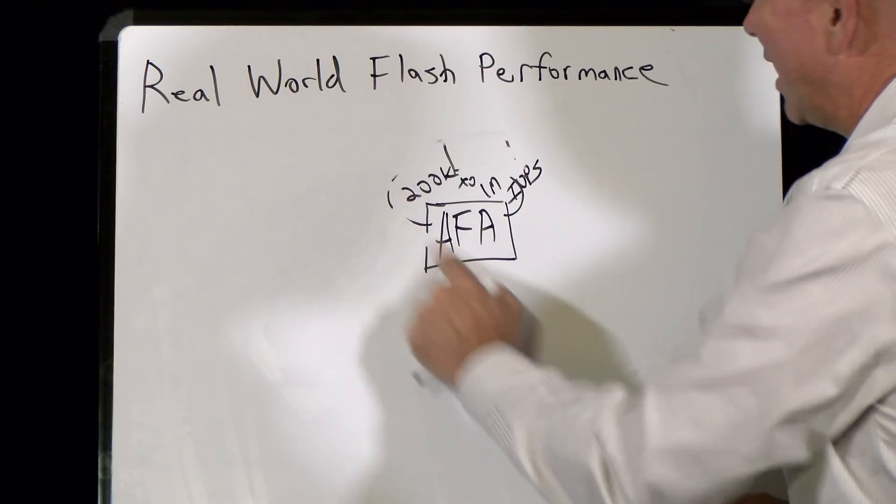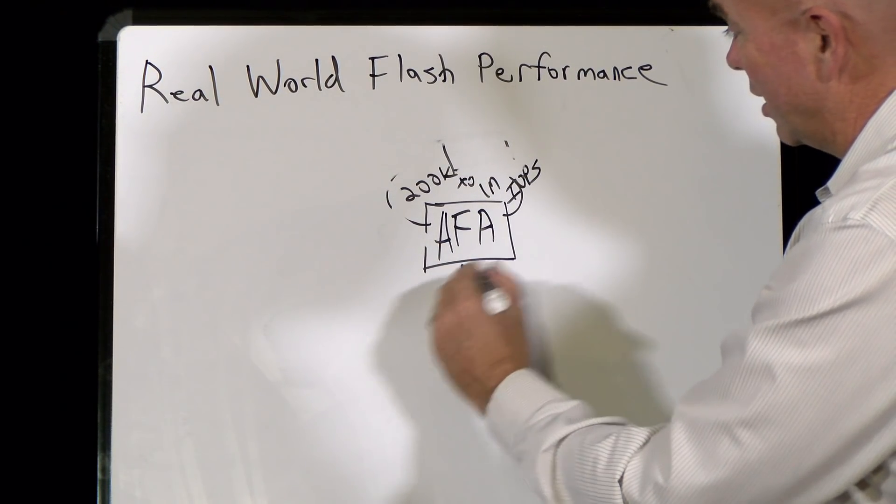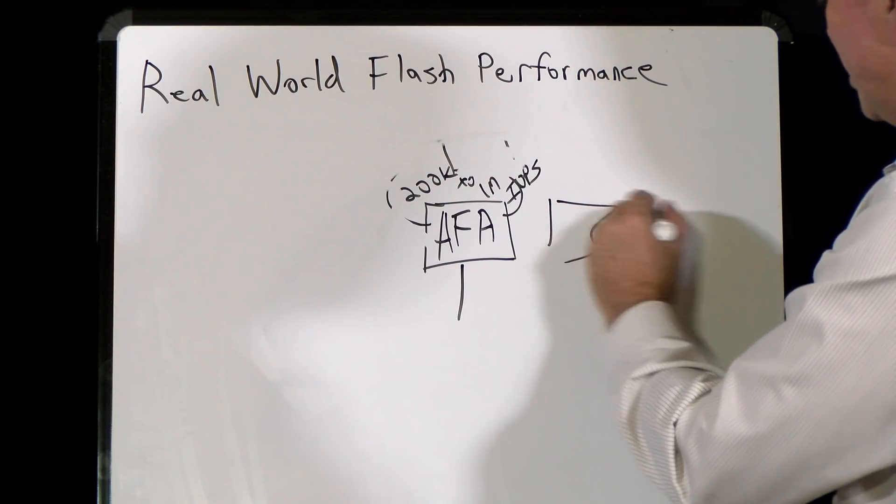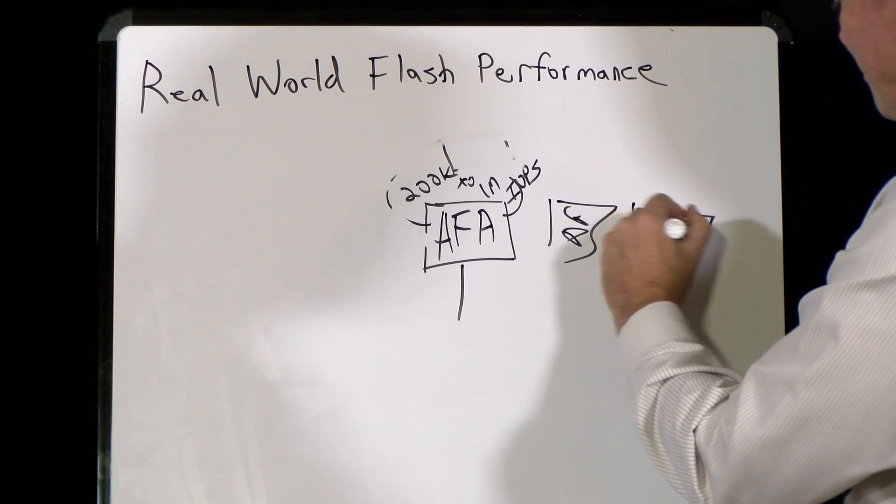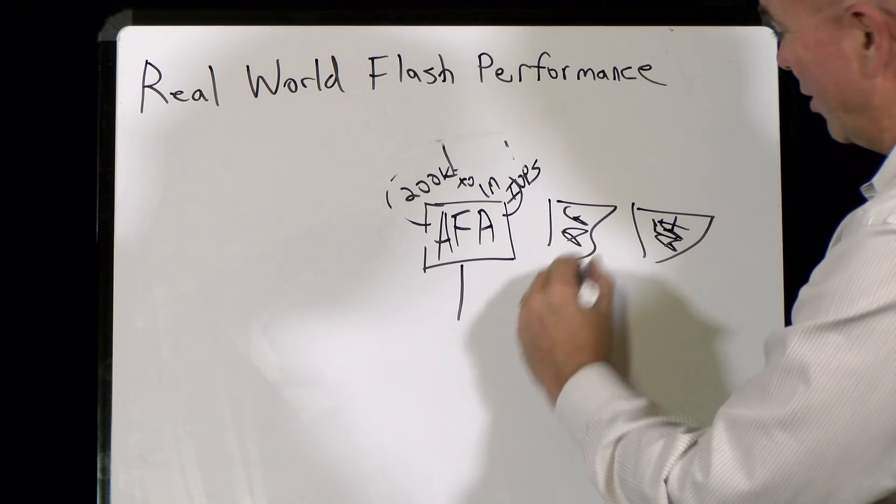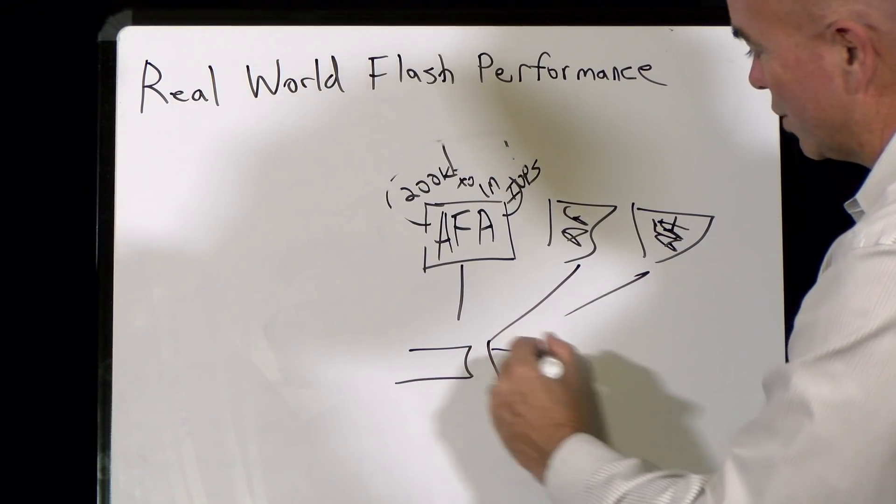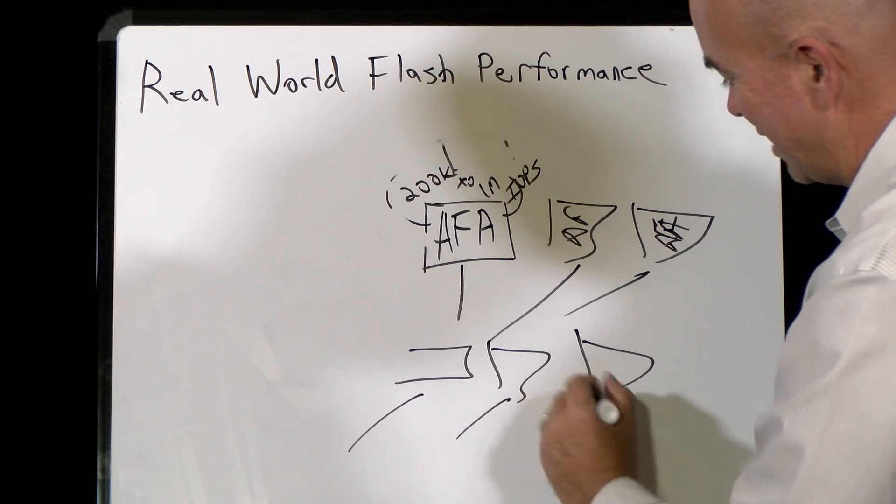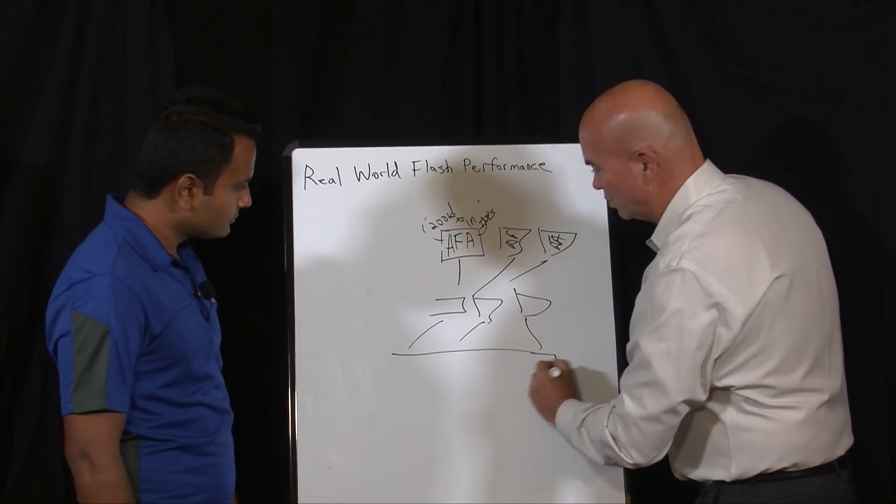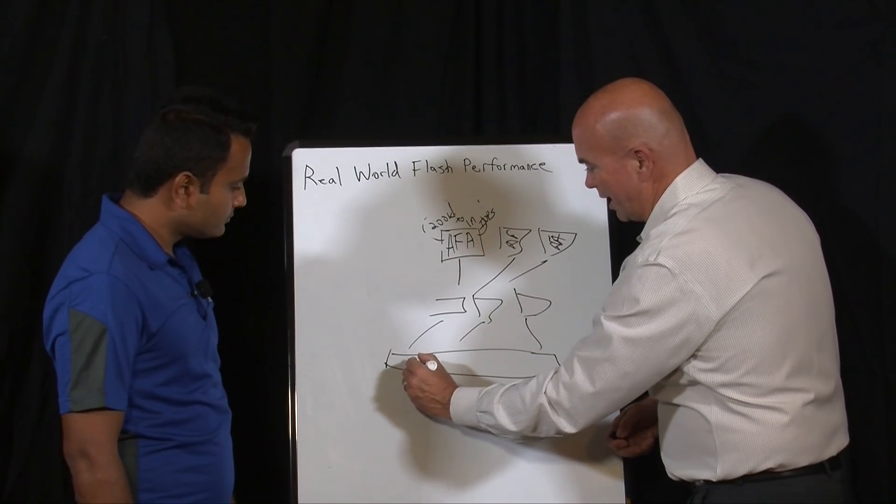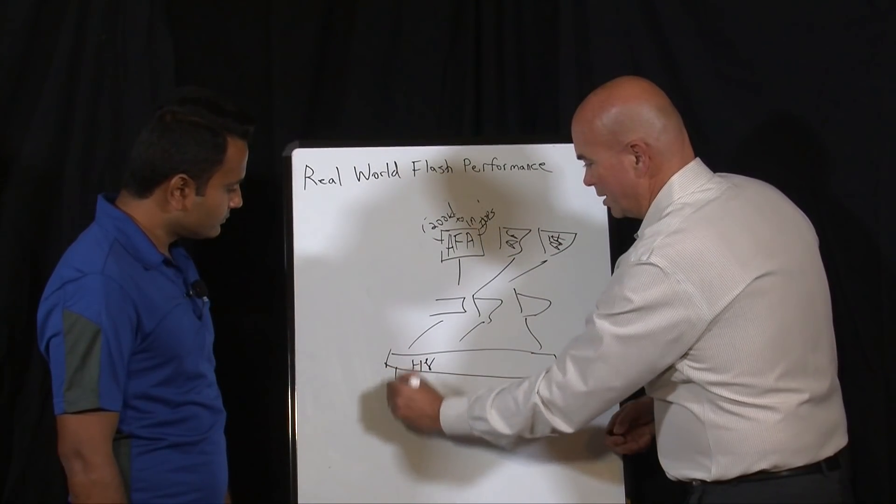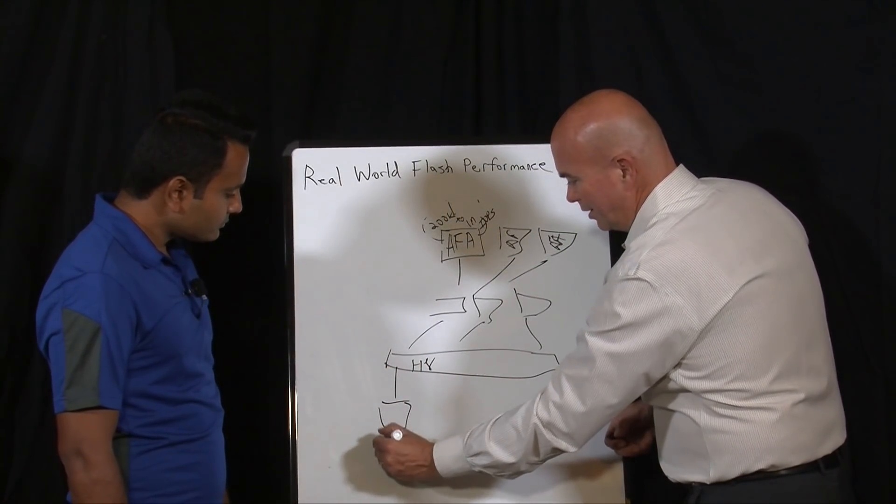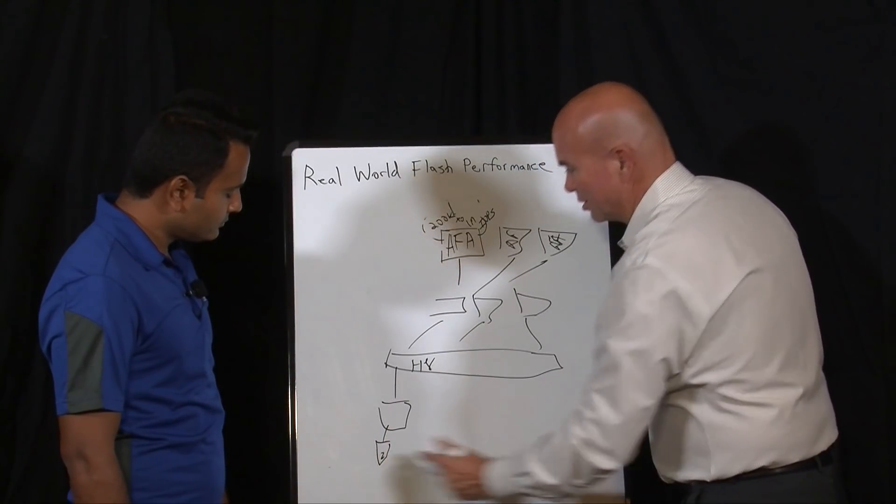And that's just not the real world. What happens in the real world is you've got multiple all flash arrays, and those are connected to a switch fabric, and of course that is connected to some sort of compute layer that might be running a hypervisor and then hosts and virtual machines. So you end up with a stack that you really have to manage.